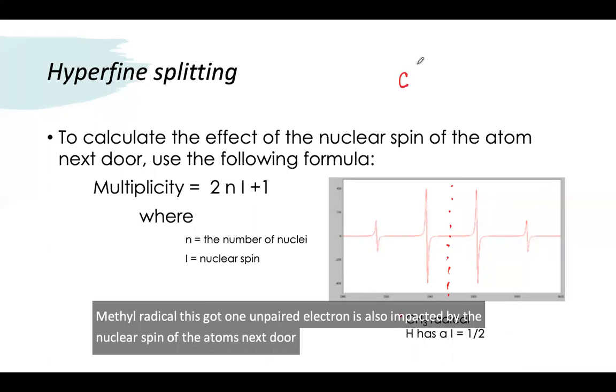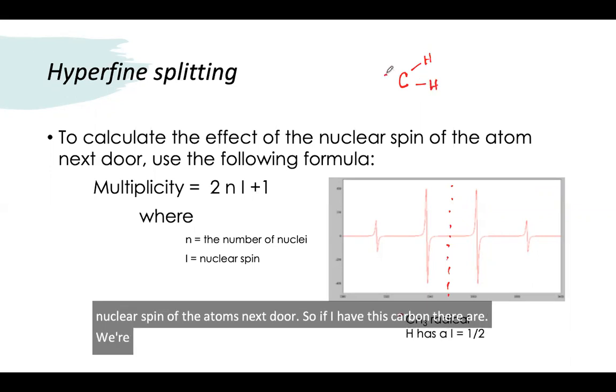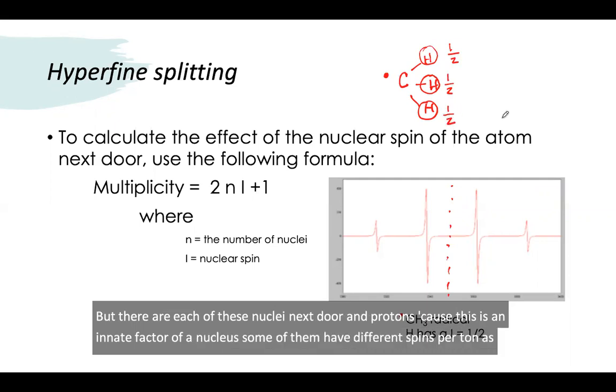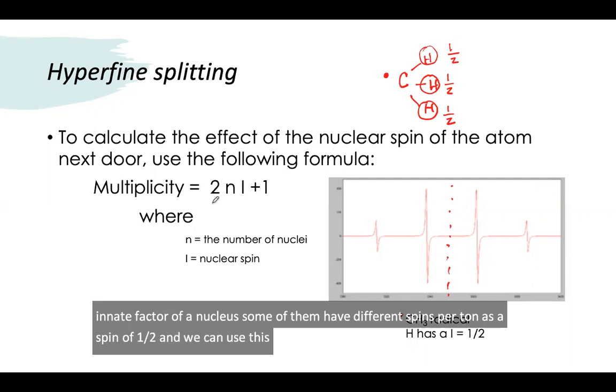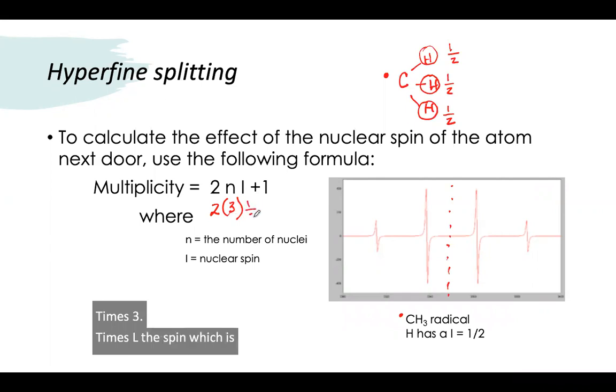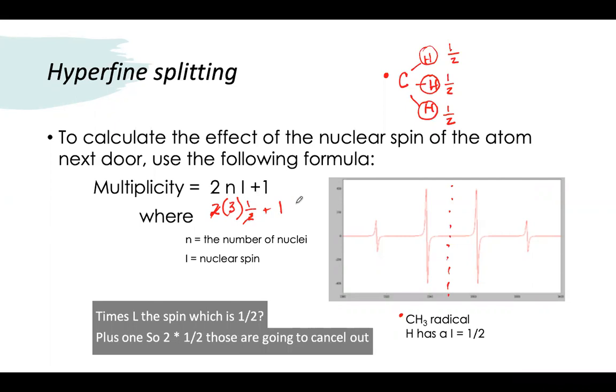If I have this carbon—we're in EPR, we're observing this electron—but there are each of these nuclei next door. Protons have a spin of one half. We can use this formula: multiplicity equals 2n I + 1 where n is the number of nuclei, so we have three of them here, times I the spin which is one half, plus one. So two times a half cancel out. Three times one plus one equals four. So I get a splitting of four lines.